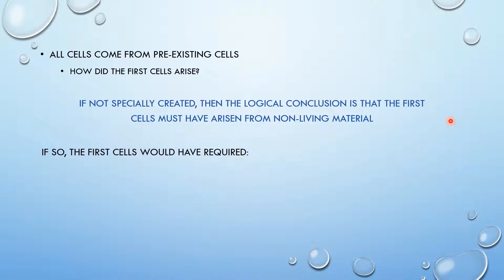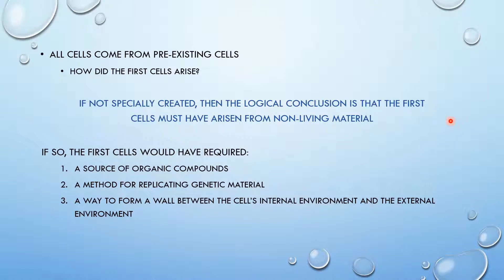So for the first cells to arise, it would have required: one, a source of organic compounds, because we know that cells are composed of organic compounds; two, a method for replicating genetic material, because all living things need genetic material to reproduce and produce more cells; and three, a way to form a barrier between the cell's internal environment and the external environment. These are the three requirements for the production of the first cell. This is crucial, so make sure you guys understand these three points.